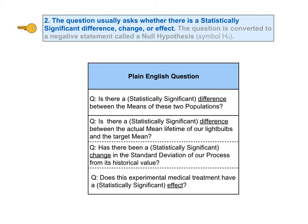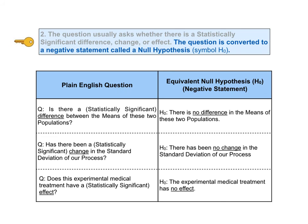These are everyday, easily understandable questions. But since this is statistics, it seems simple things need to be made complicated and confusing. So we first need to convert the plain English question into a negative statement called the null hypothesis. If you follow our advice of first stating a plain English question asking whether there is a statistically significant difference, change, or effect, it is fairly straightforward to come up with a null hypothesis. You can avoid unnecessary confusion that way.